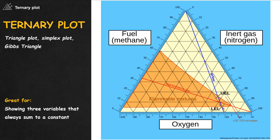The ternary plot — also called the triangle plot, simplex plot, or Gibbs triangle — is something quite different from every chart above. Whenever you have three variables that always sum to a constant, this is the perfect graph. Now head over to the next video to see every business framework explained.